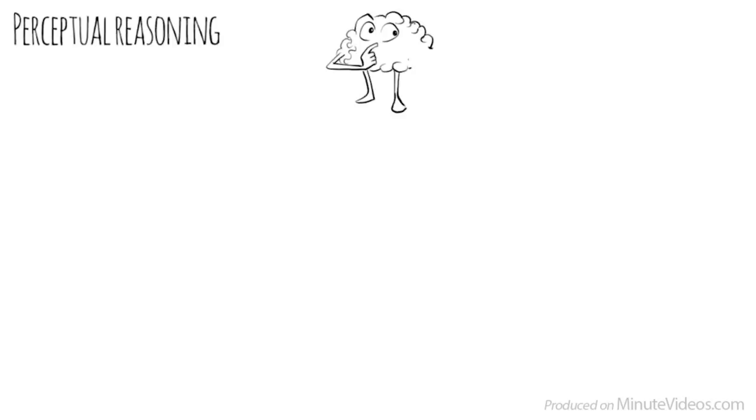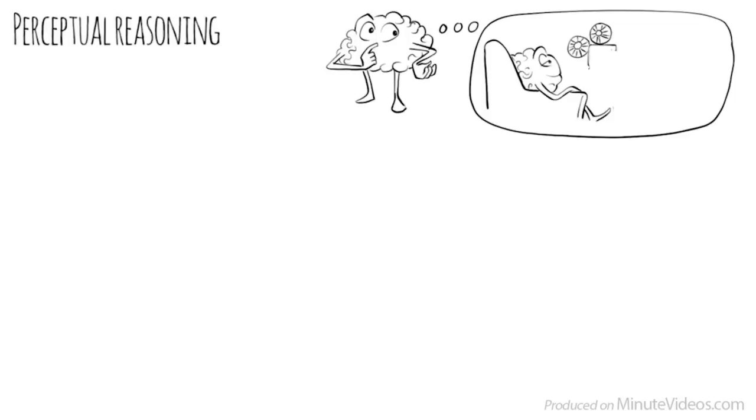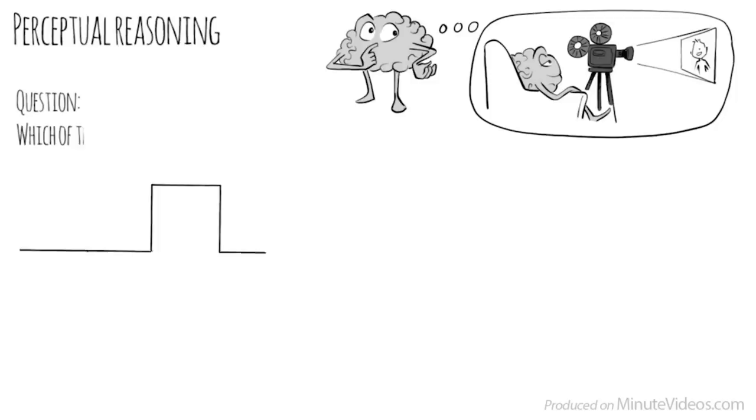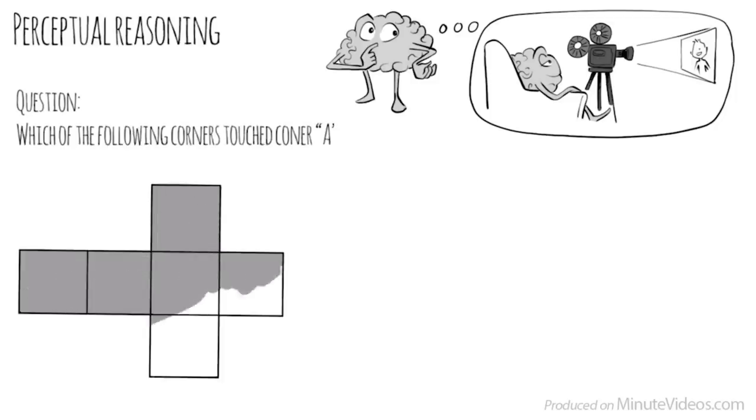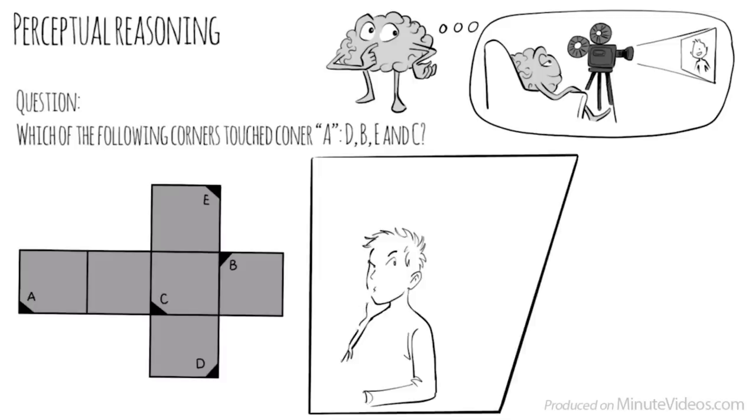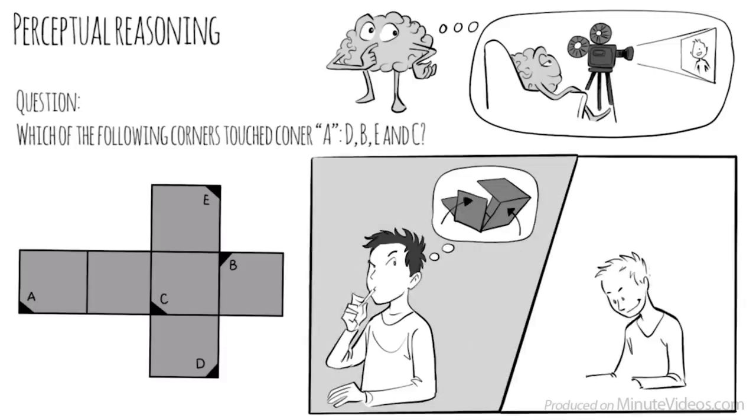I turned the first page over. It read the following: Perceptual reasoning is the ability to think and reason with visual information. It is the ability to see what is being asked and to organize information in our heads through images. The first question was, When folded into a cube, which of the following corners would touch corner A? D, B, E, or C? I tried to fold the cube in my head. And yeah, it worked. It must be D.